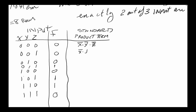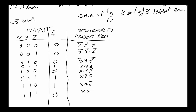For row 1 (001), the product term is x̄·ȳ·z. For row 2 (010), it's x̄·y·z̄, which gives one when we plug in 010. We continue for rows 3, 4, 5, 6, and 7. These are called product terms, and row 7 corresponds to decimal equivalent 111. These product terms are one only when their specific combination of inputs is applied.